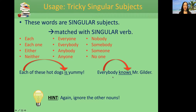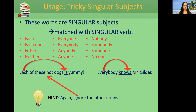Hint again: ignore the other nouns. If there's a comma, separate your nouns and verbs to find your subject. Cross it out — that would be the best thing.